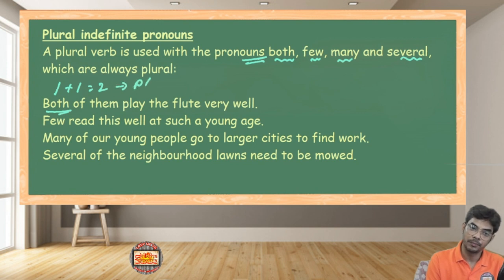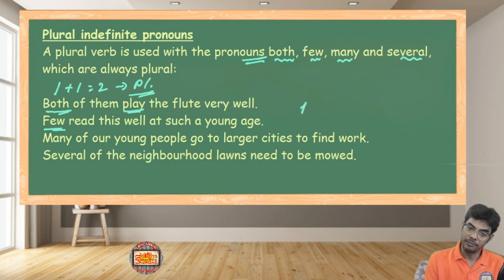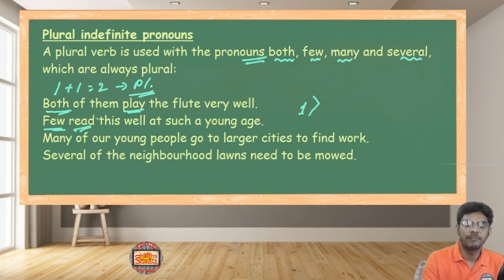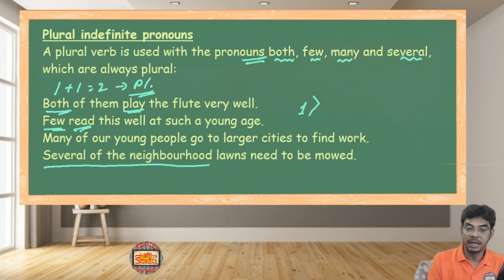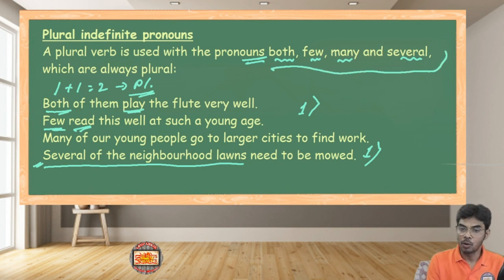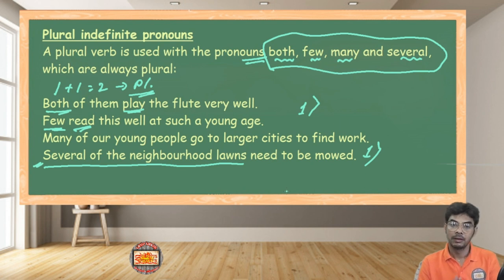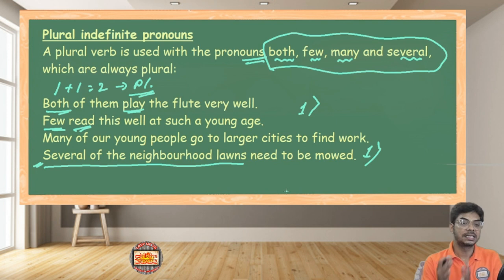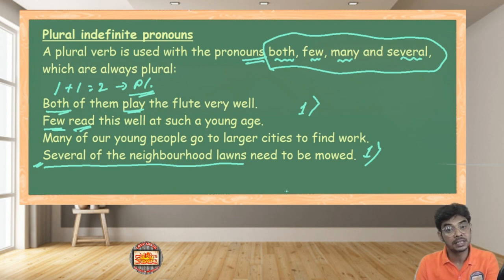Here we use a plural verb. 'Few read this well' — 'few' means more than one, so we use the plural verb form 'read.' 'Many of our young people' and 'several of the neighborhood lawns need to be mowed' — 'several' also means more than one. So these four expressions — 'both,' 'few,' 'many,' and 'several' — you may jot them down and remember them. Note-taking is very essential here for all these rules.